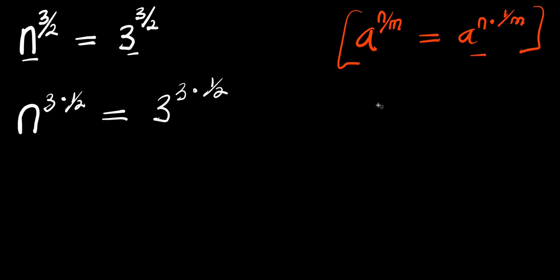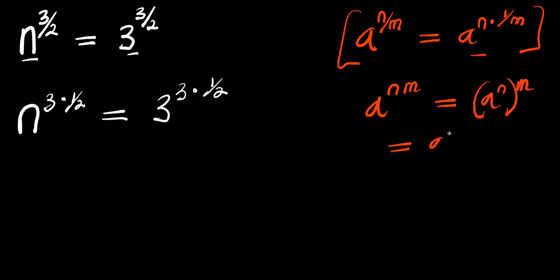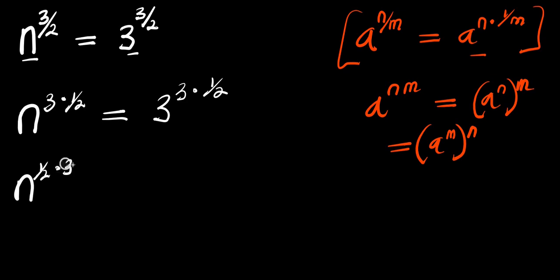Now we consider this other identity: if you have a power n times m, this is a power n to the power of m, and also this is a power m to the power of n. So applying that here, it will simply give us n power 1 over 2, times 3, and this equals 3 power 1 over 2 times 3.